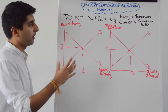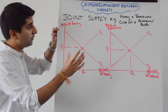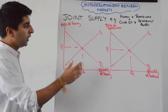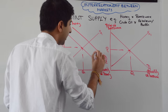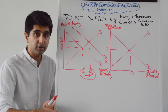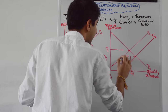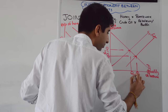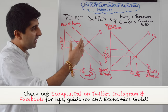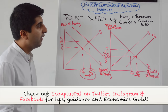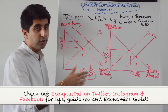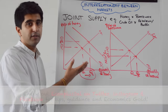To show joint supply on a diagram, let's look at honey and beeswax. When production of honey goes up, the supply of beeswax will shift to the right. An increase in demand for honey leads to an increase in production of honey — that's the key point. So when there is more production of honey taking place, there will be an increase in the supply of beeswax from S1 to S2, because beeswax is a byproduct. We could also show this for crude oil and petroleum — an increase in production of crude oil would lead to an increase in the supply of petroleum and paraffin. You show a shift of supply of the second good which requires or derives from the first good's production.